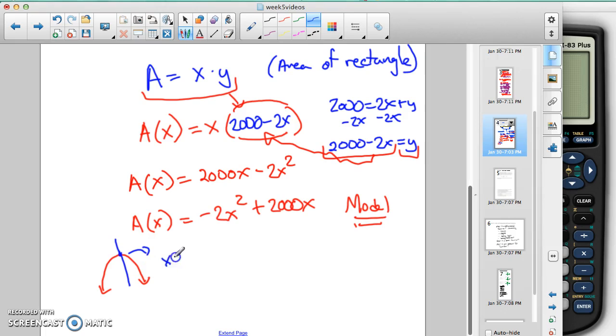The x value is going to be minus b over 2a. That's our formula we used in the past to find that x value of the vertex. And we can do that again using these values. So it's going to be minus 2,000 because this is b and this is a.